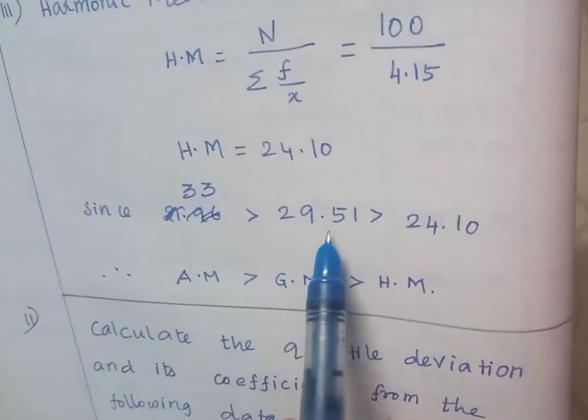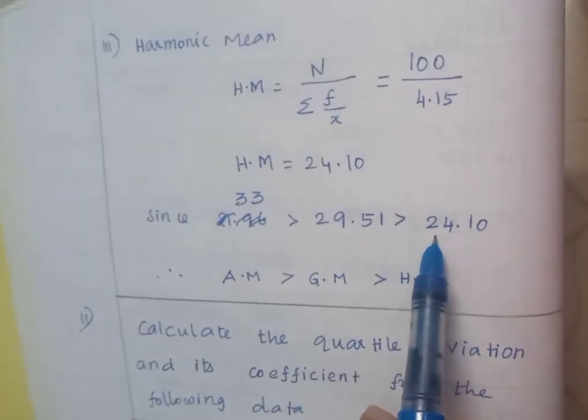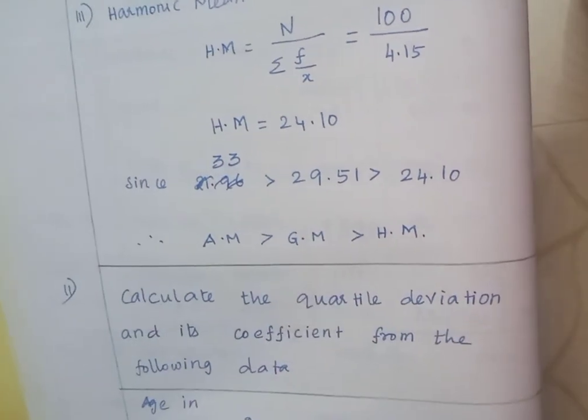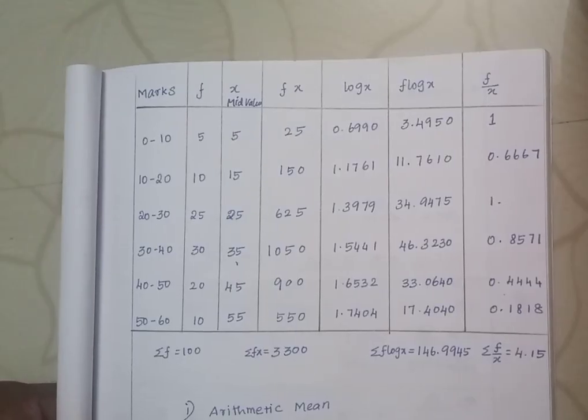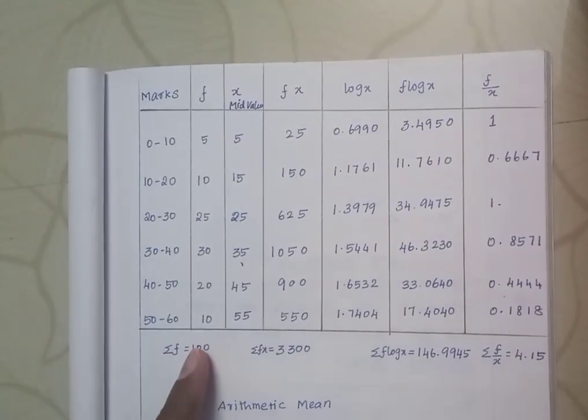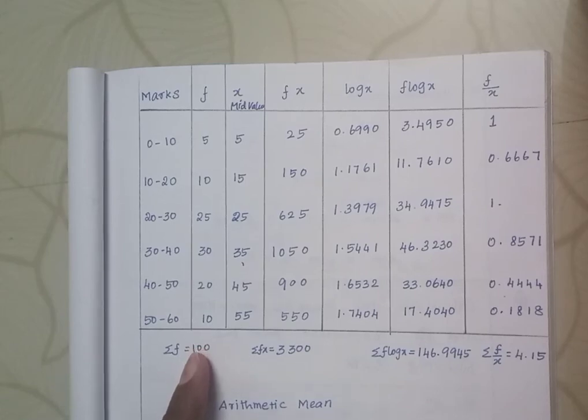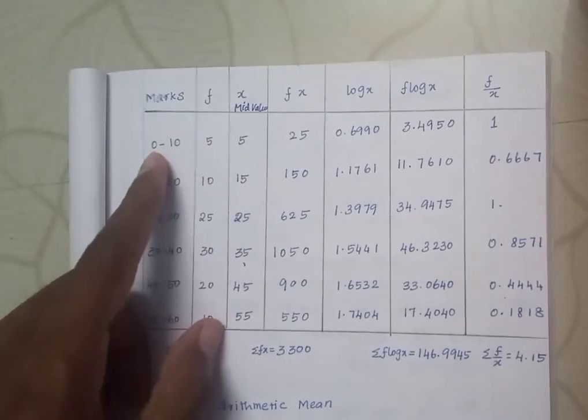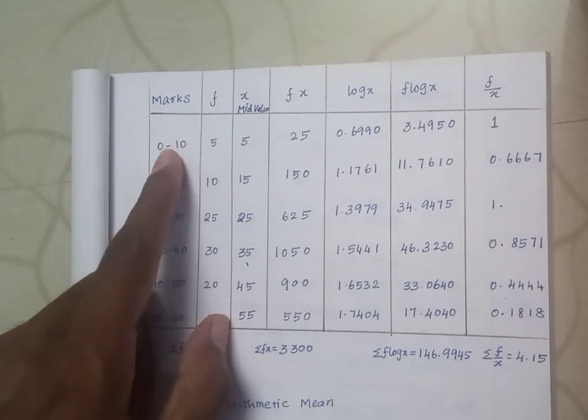Geometric mean is 29.51, harmonic mean is 24.10. AM is greater than geometric mean, which is greater than harmonic mean. See the table, it's correct. When class interval is given, x values aren't given, but we find x value by adding the class interval and dividing by two.